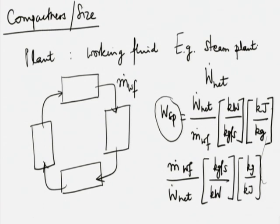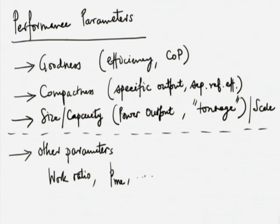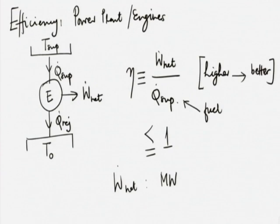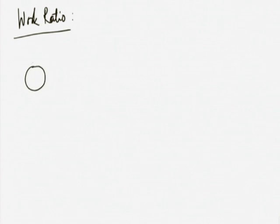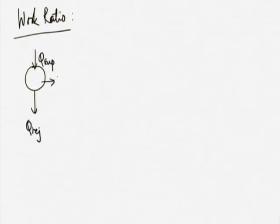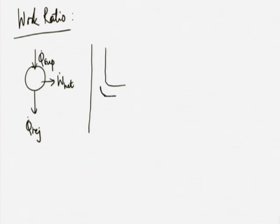These parameters — efficiency and compactness — are what we look at, along with the work ratio. Work ratio can be applied to engines and sometimes to refrigerators. Many textbooks show a simple schematic of an engine with Q supplied, Q rejected, and W net. But it can also be shown as a Sankey diagram. It is not like a highway with one lane going one way and another going the other — in reality, to keep the plant working there are internal exchanges not seen from outside.